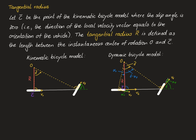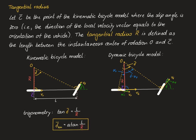Now let's apply trigonometry to derive a relationship between the tangential radius r_bar and the Ackermann steer angle delta_bar. For the kinematic bicycle model, looking at the right triangle, the tangent of delta_bar equals l divided by r_bar, where l is the wheelbase. With the small angle approximation, the Ackermann steer angle of the kinematic model is approximately l divided by r_bar, or more precisely, the arctangent of l divided by r_bar.